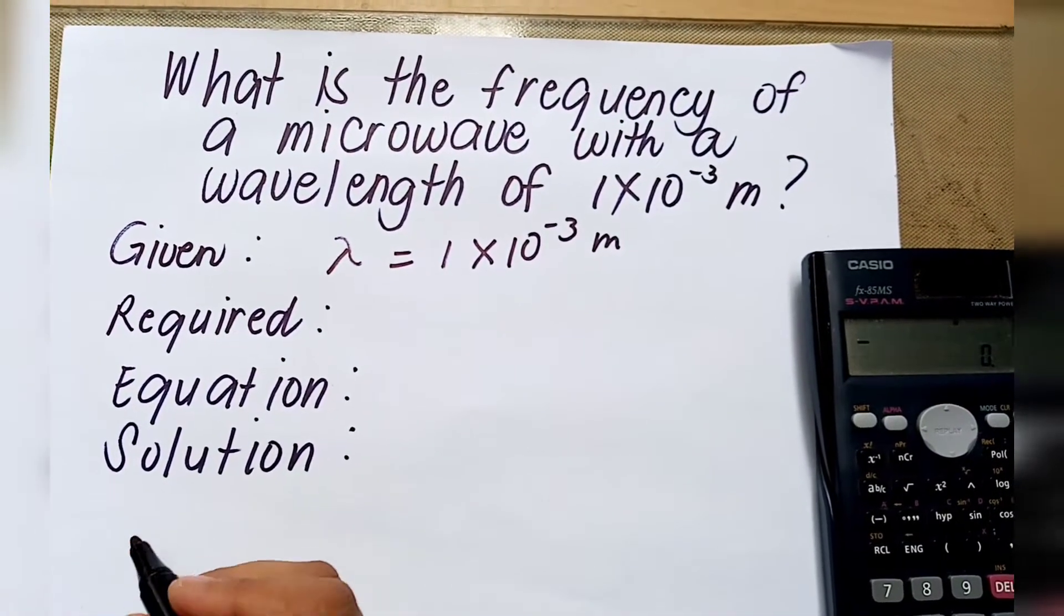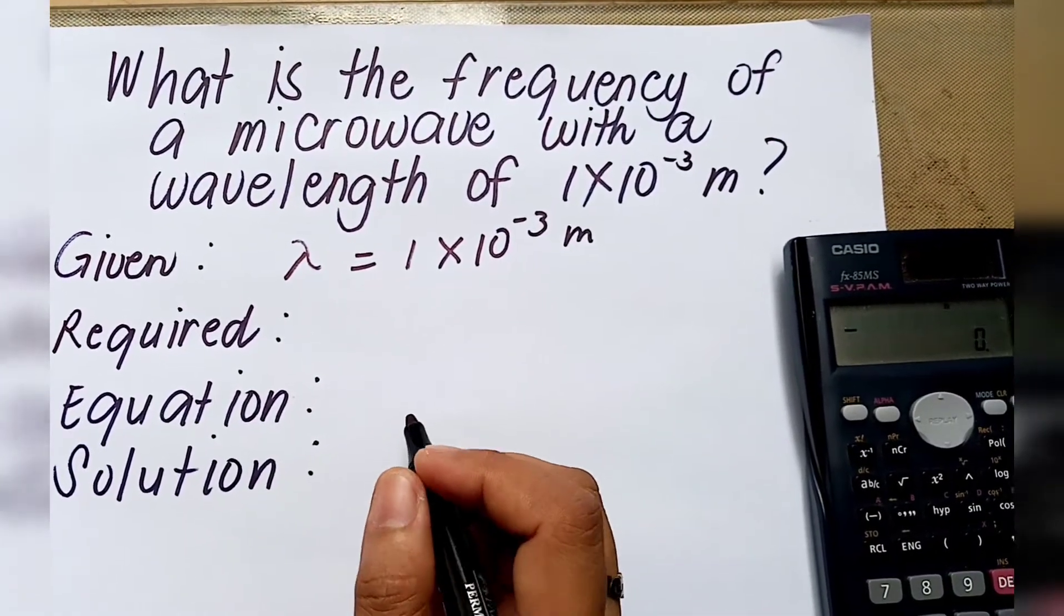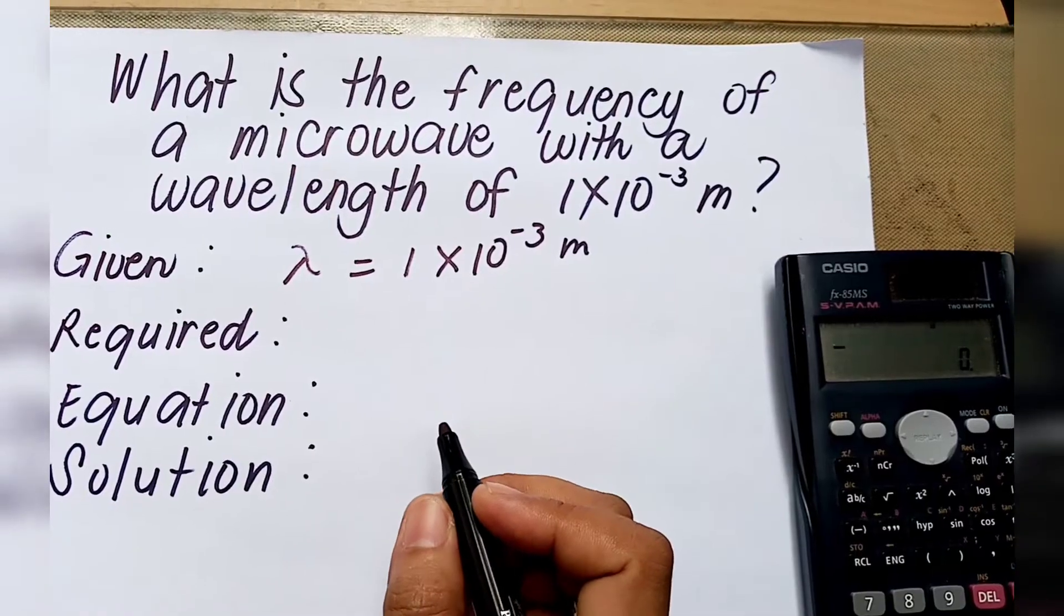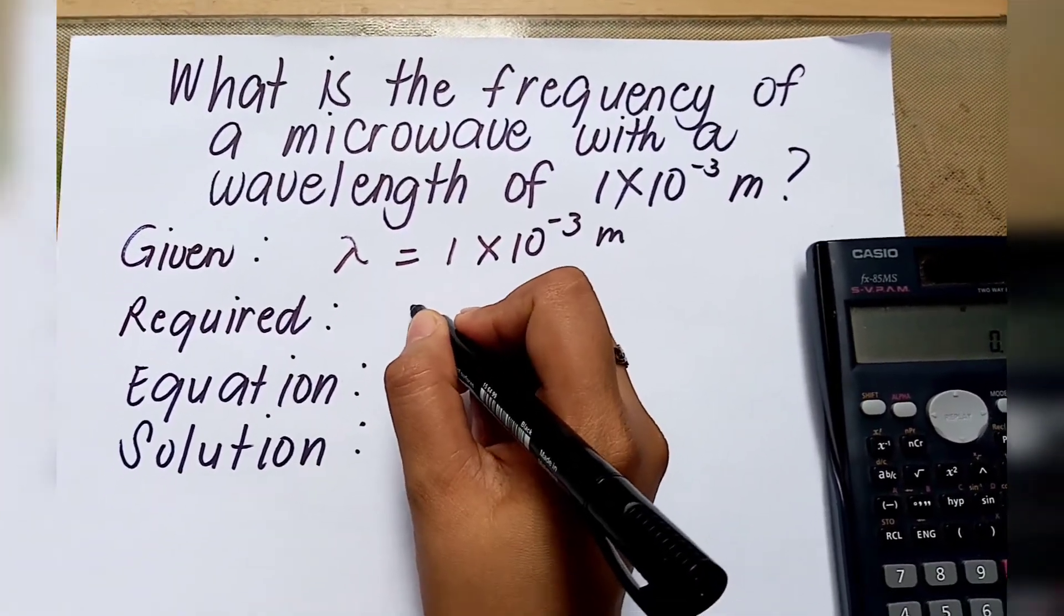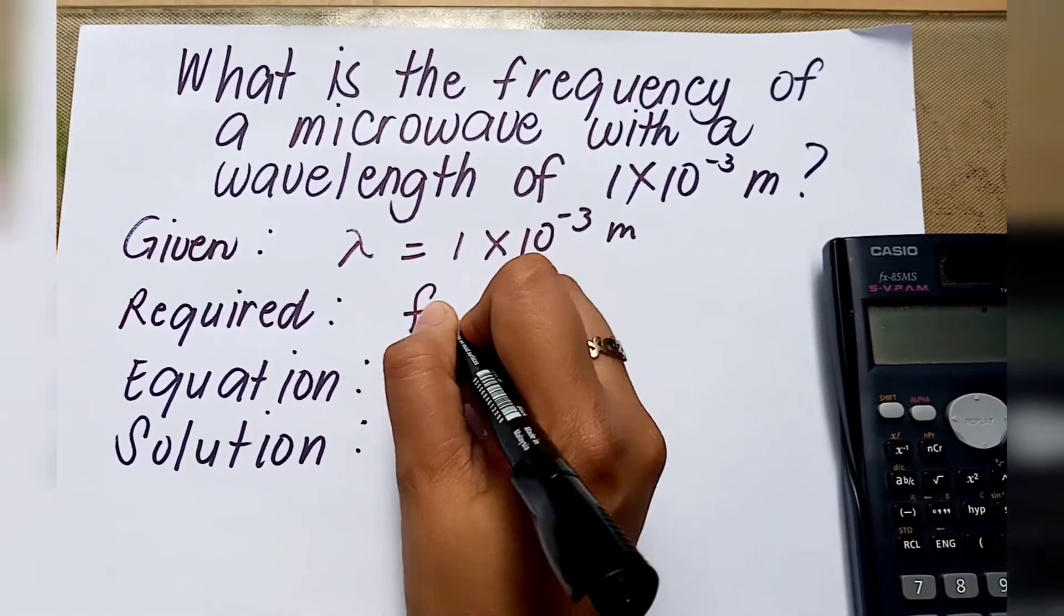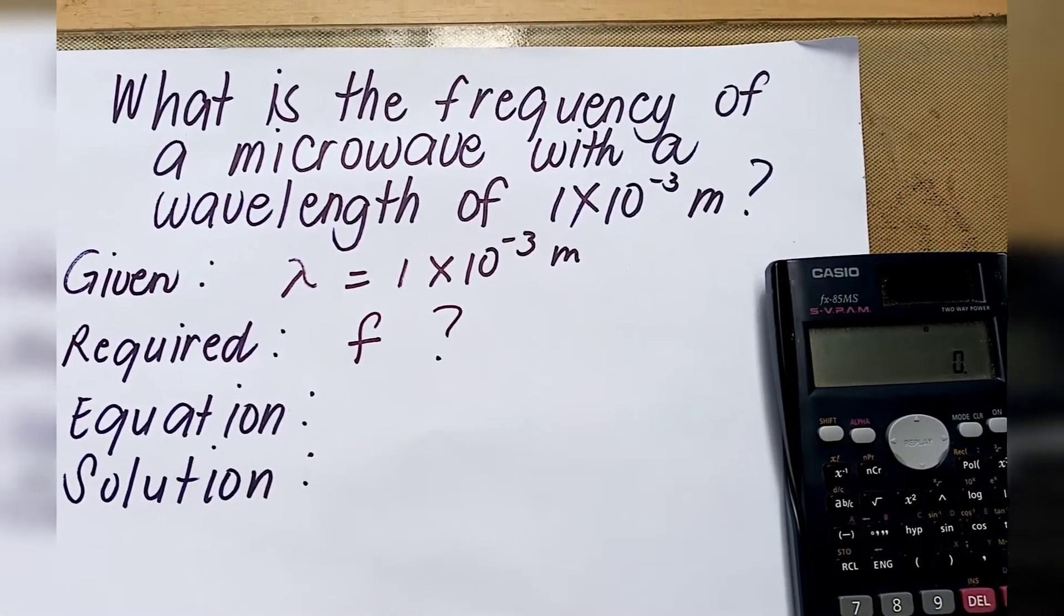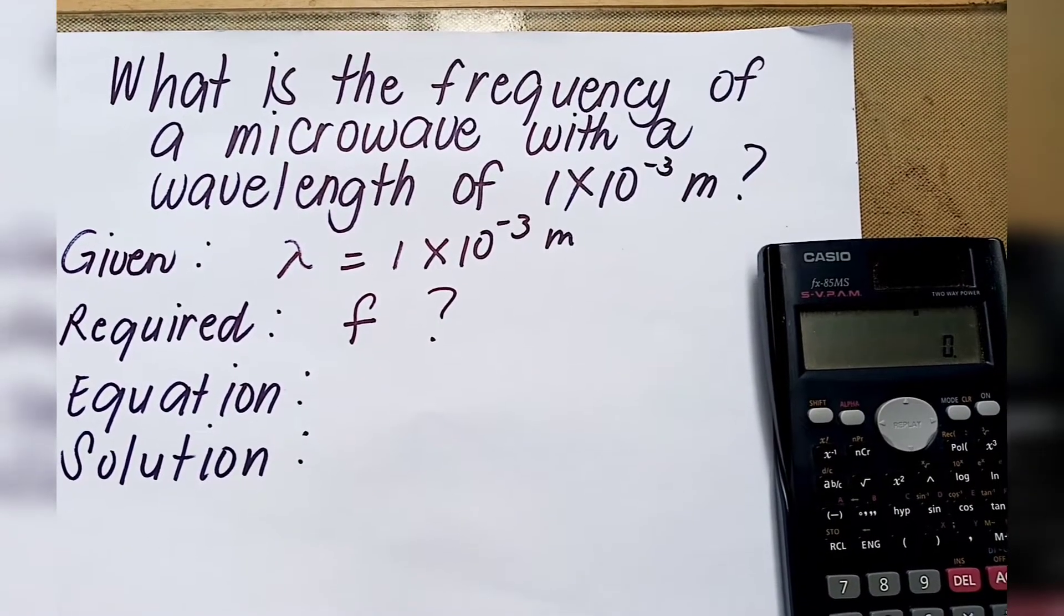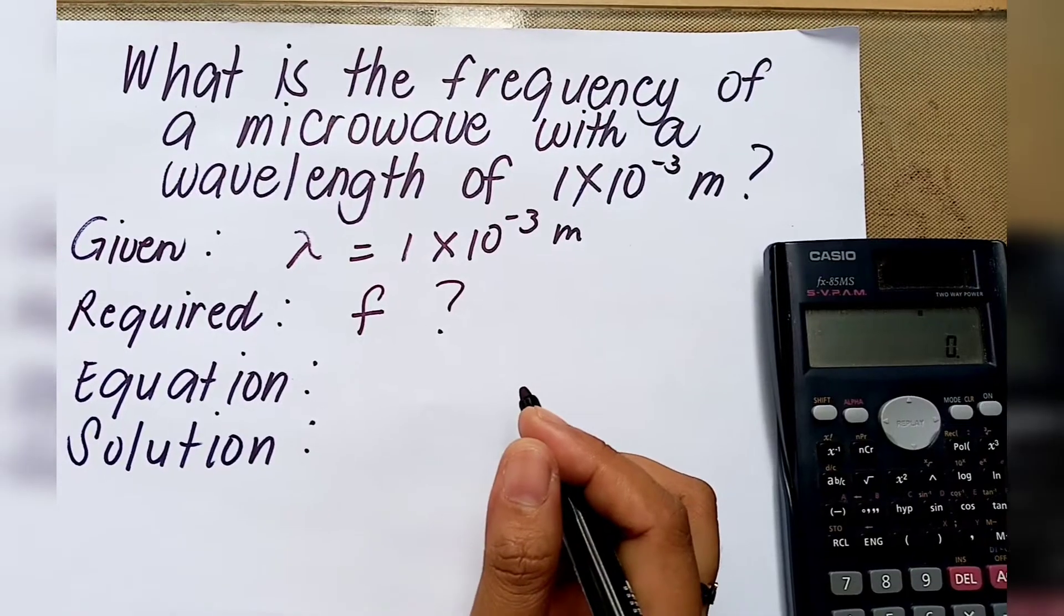How about the required or unknown? It is the frequency. We are looking for the frequency of a microwave with a wavelength of 1 times 10 to the negative 3 meter.